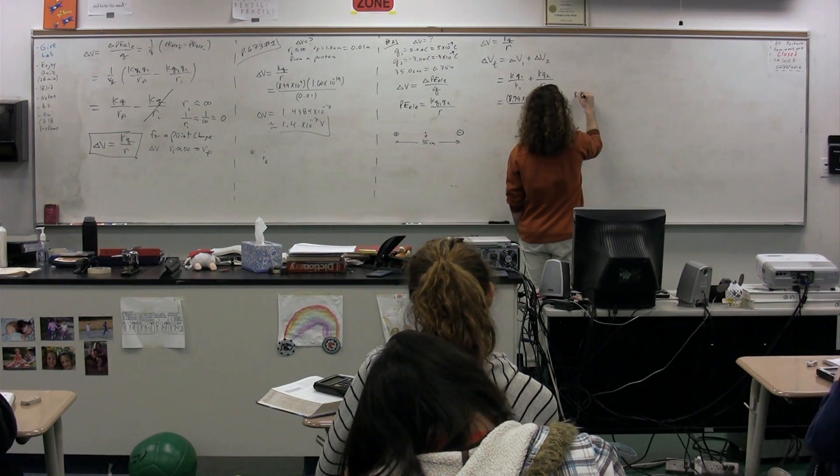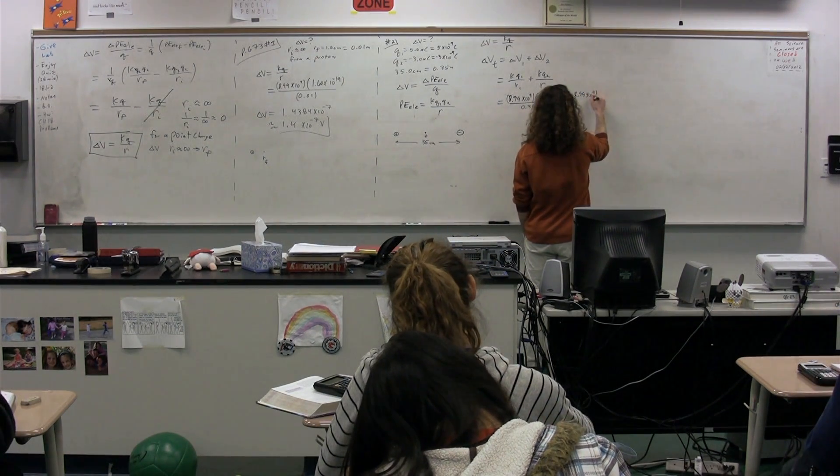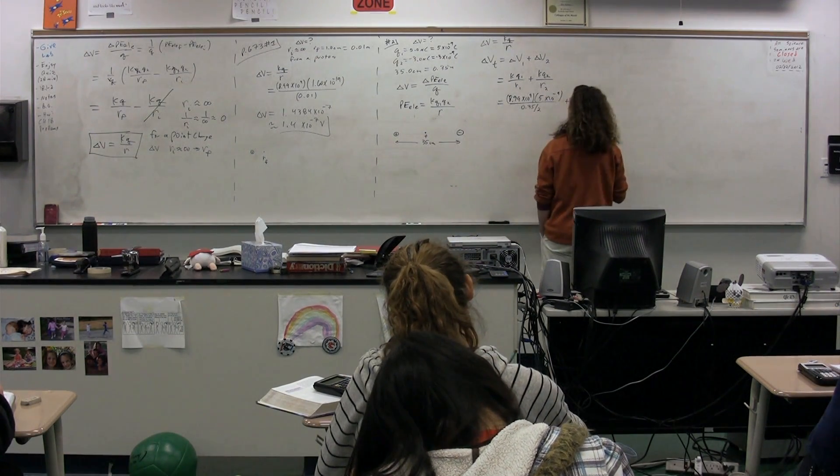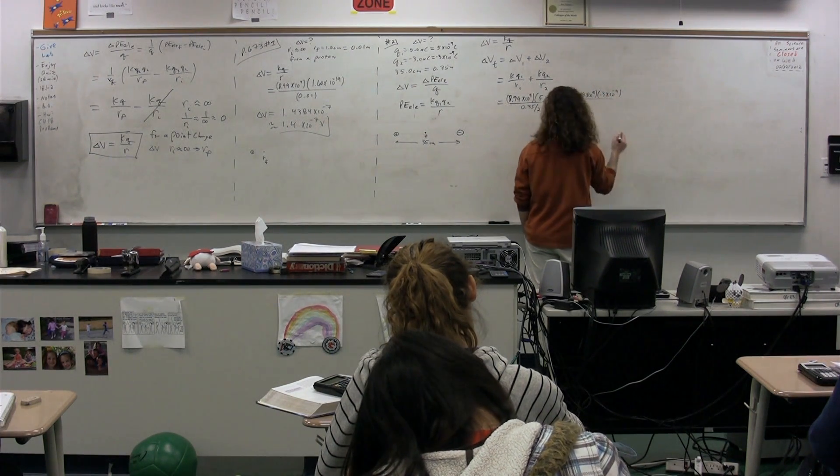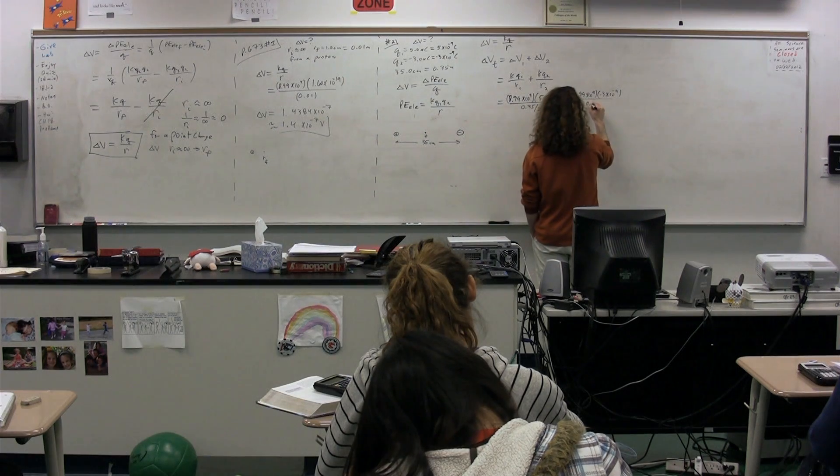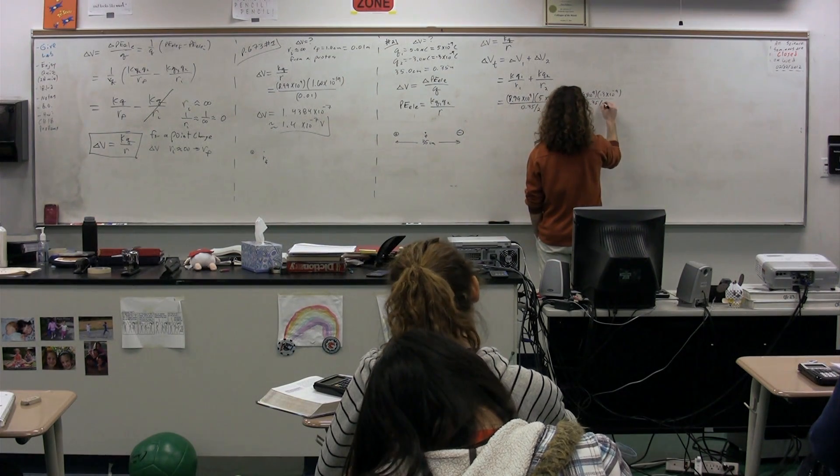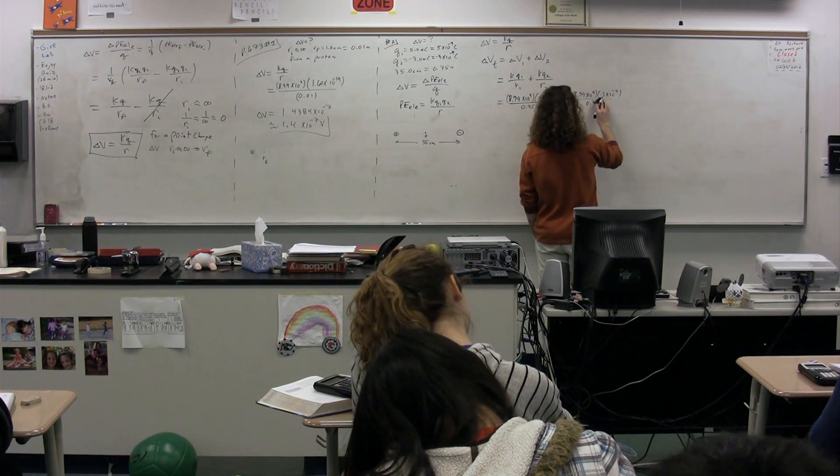Keep going here. We have 8.99 times 10 to the 9th. Charge 2? Negative 3 times 10 to the negative 9. Divided by? The same numbers - 0.35 divided by 2.